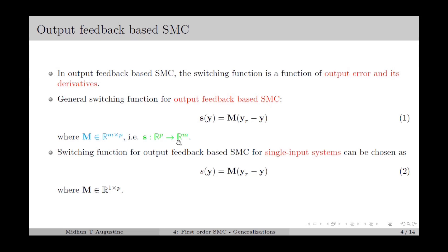In the case of a single input system, we have M equal to 1, so the switching function will be as in equation number 2, where we have only one sliding variable, and M will be a row vector. In output feedback-based SMC, we use this switching function for computing the control input.